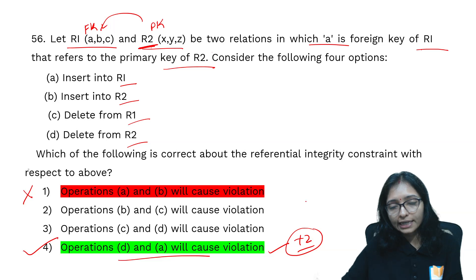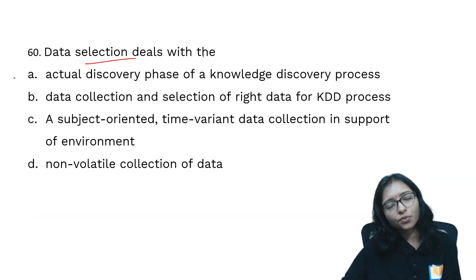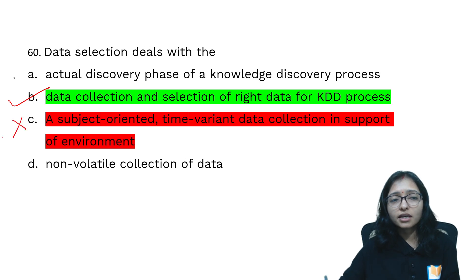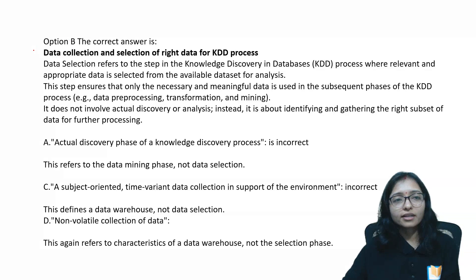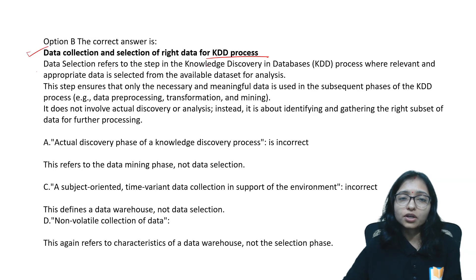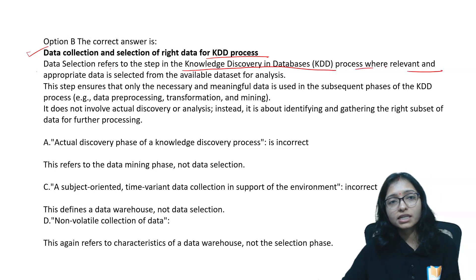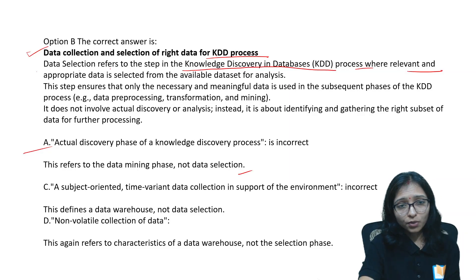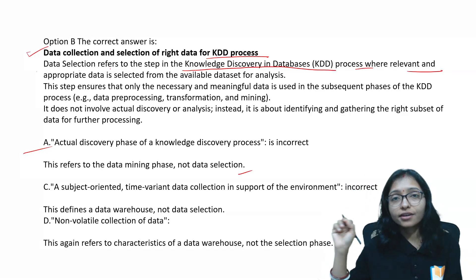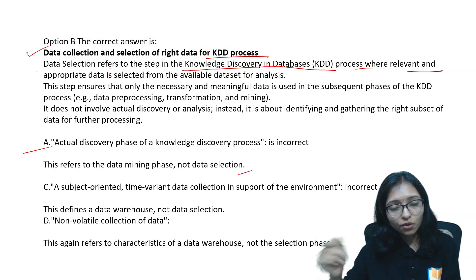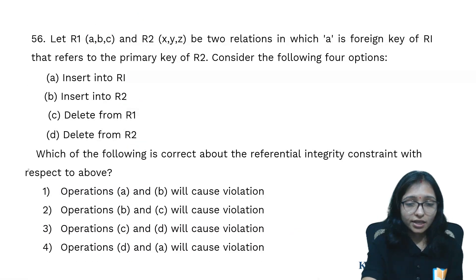Those who marked D can get plus two here — definitely challenge this question. For the next question about data selection, I have an objection. We provided option B and option B is the correct answer — the official answer is again wrong. Data selection refers to the step of selecting relevant data in the Knowledge Discovery in Databases (KDD) process. I am uploading a supportive PDF to our Telegram channel — Unified Study Computer Science — where you can download it to support your challenge.